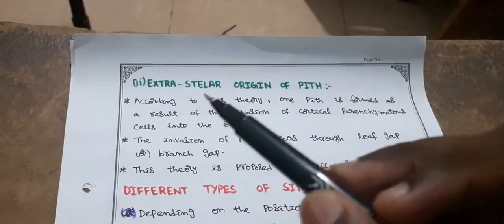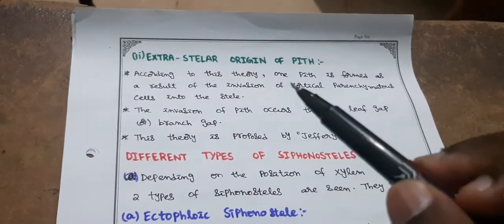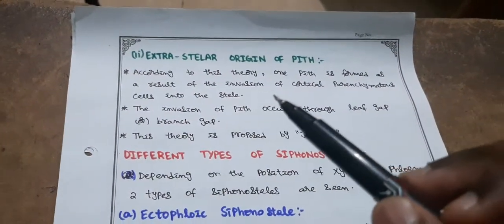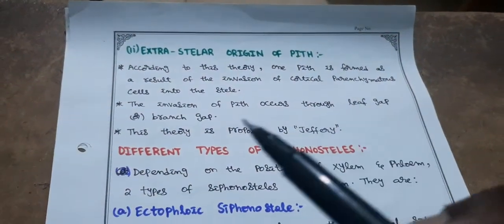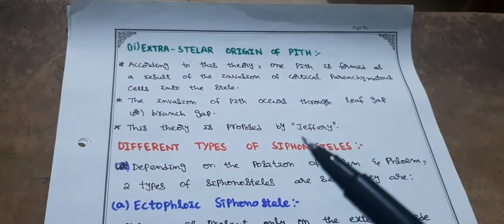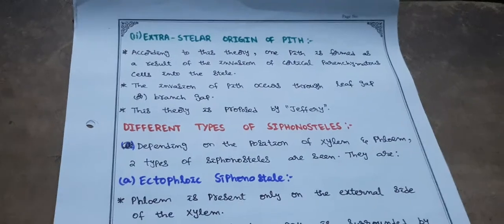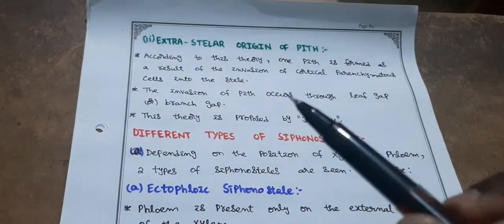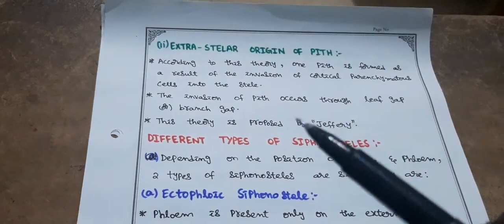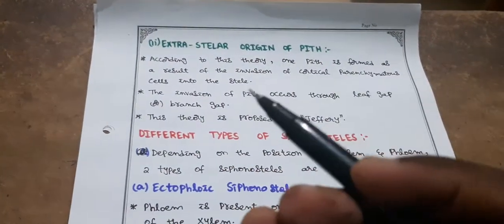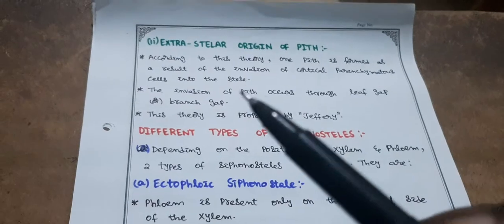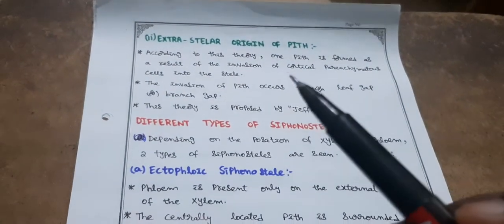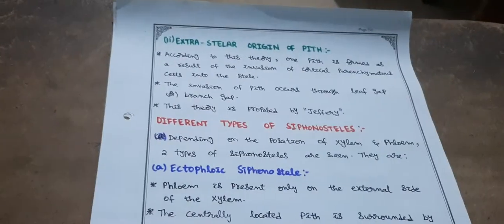The second theory, extrastelar origin of pith, states that pith is formed as a result of the invasion of cortical parenchymatous cells into the stele through leaf gaps or branch gaps. This theory was proposed by Jeffrey, but it was not widely accepted — most authors who studied pteridophytes rejected this theory and followed the intrastelar origin.